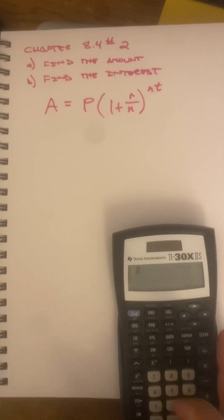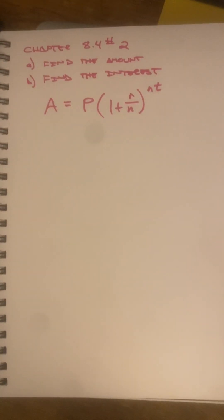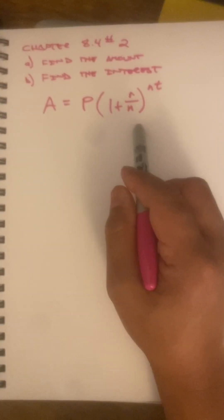Hey friends, we're on to chapter 8.4, number 2. We are going to find some amount from a compound interest account. Here's the formula that we're going to play with.